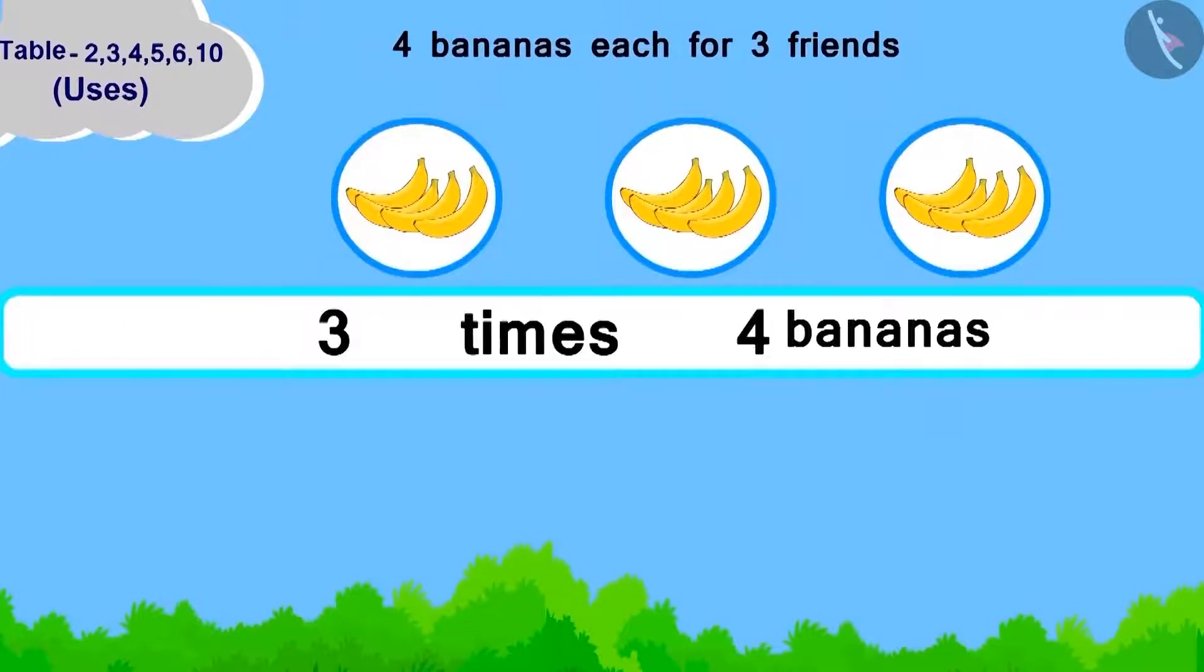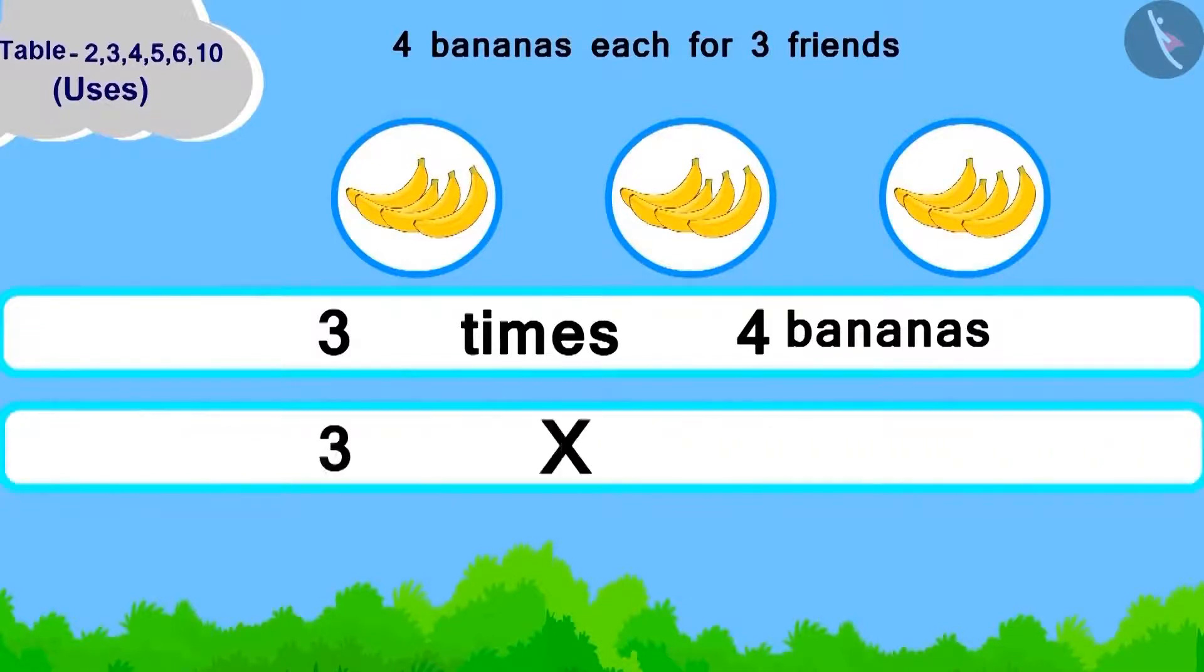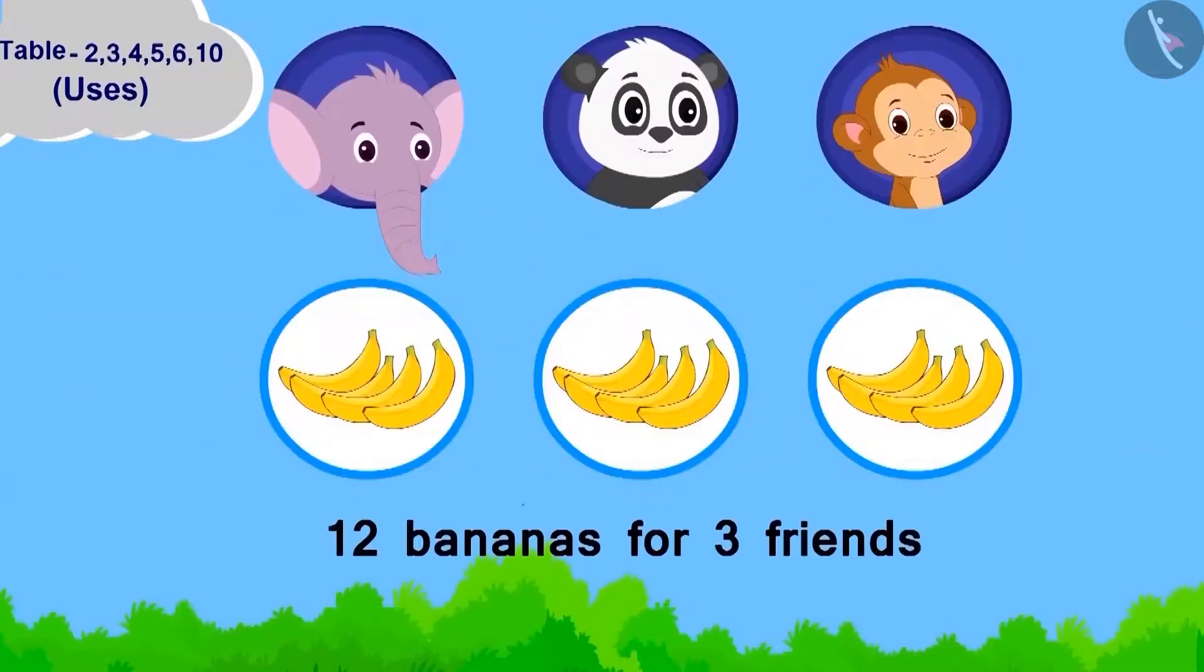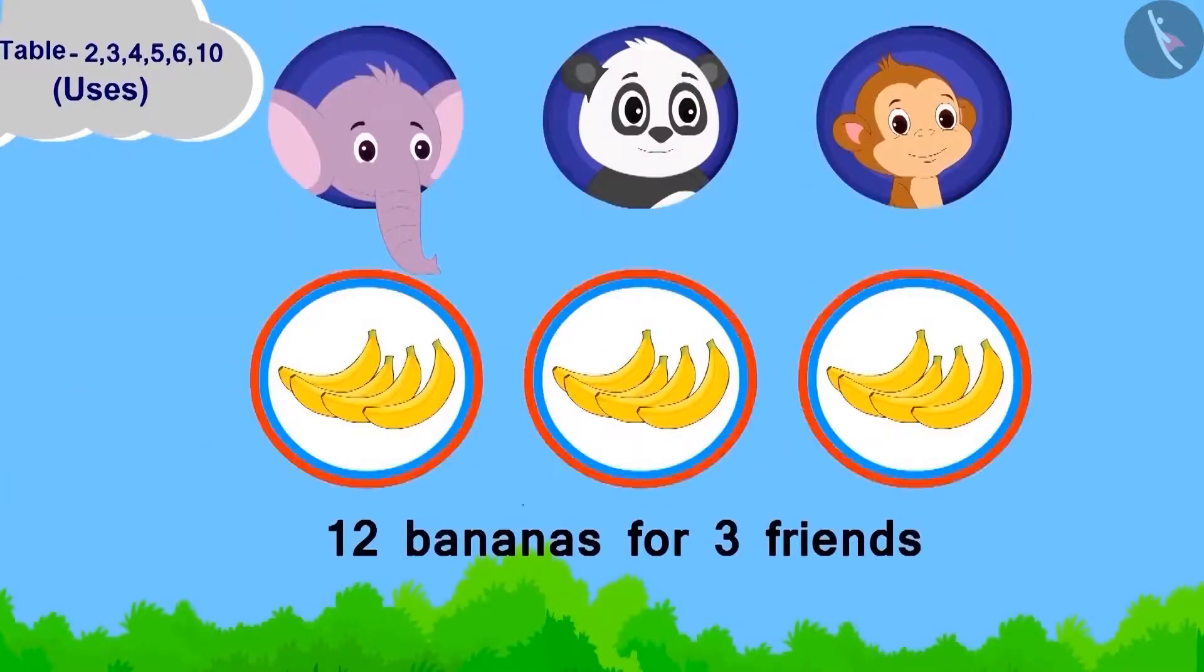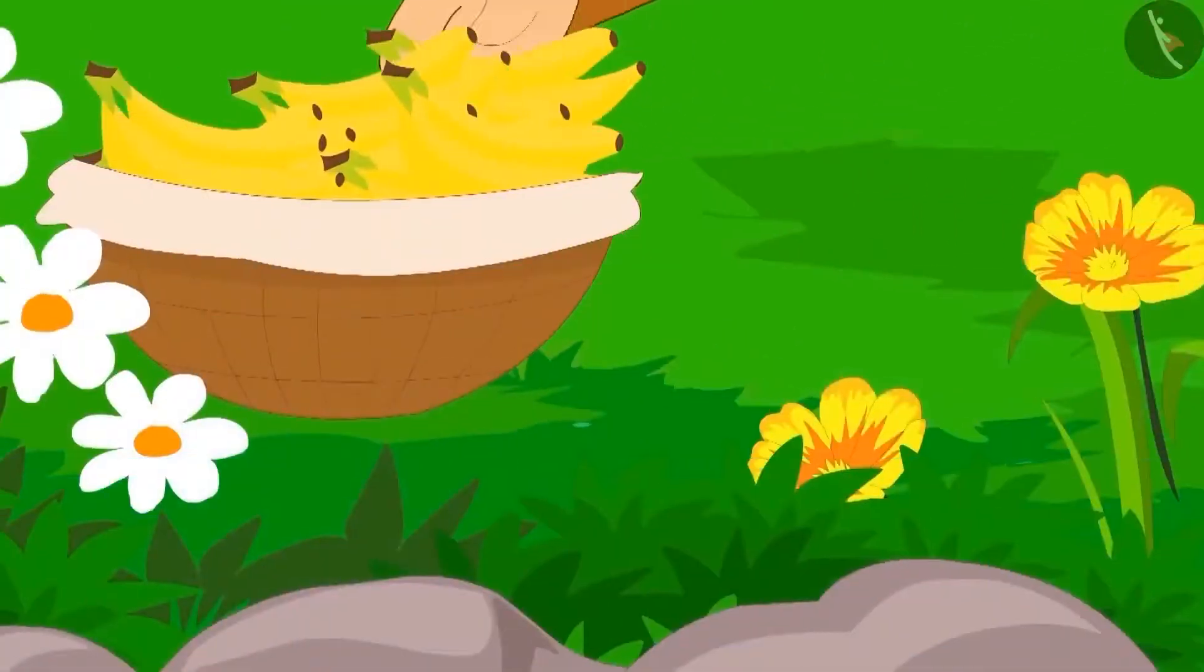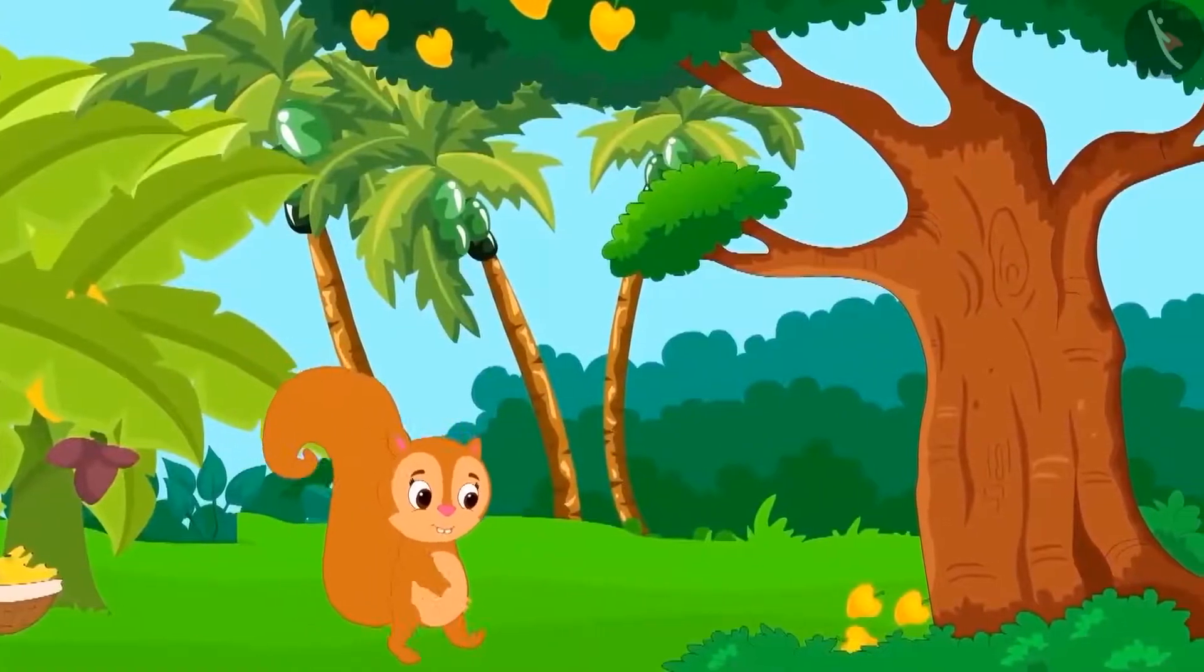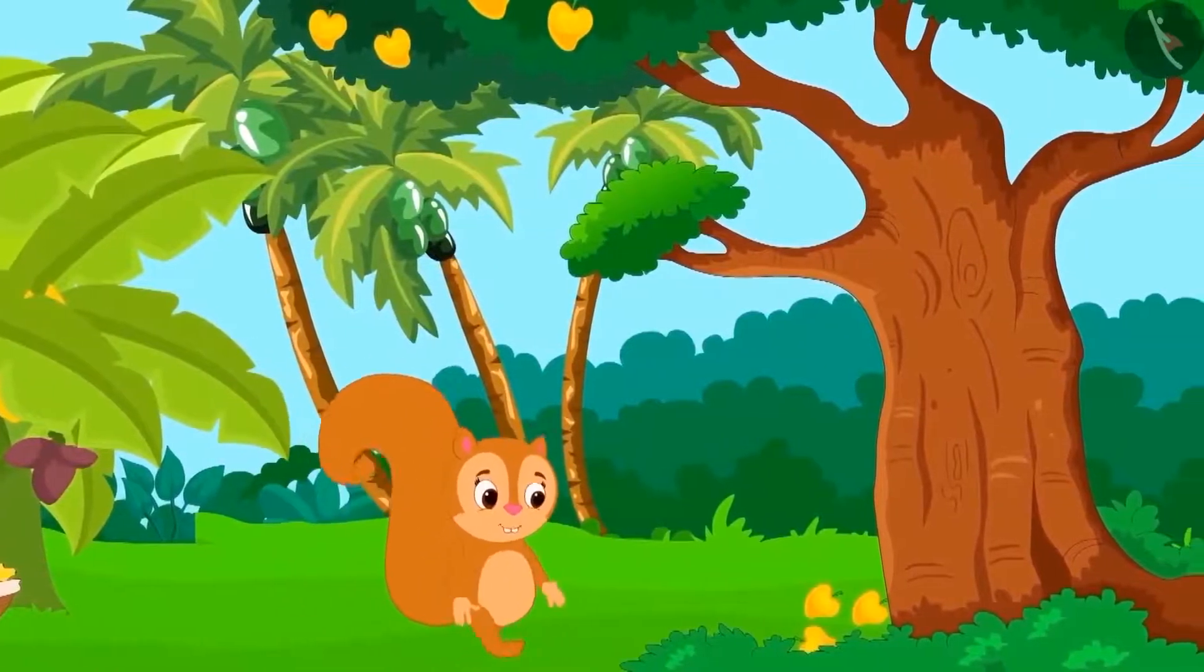3 times 4 bananas. Now, how will we write it in the form of multiplication? 3 multiplied by 4. Children, can you write its answer by using the table of 4? Absolutely right. Chanda will have to take 12 bananas for her 3 friends. Chanda filled 12 bananas in a basket and she started walking in her garden.